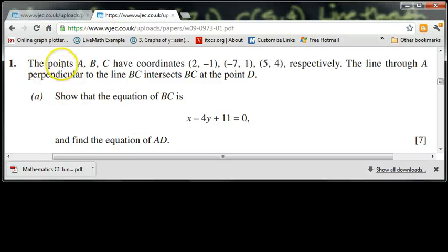OK, then let's have a go at question 1A. We've got the points A, B, C on the Cartesian axes. A has the coordinate 2, -1, B is -7, 1, and C is 5, 4. So there's three points on the x, y axes, respectively.